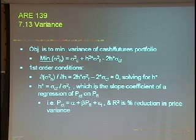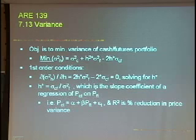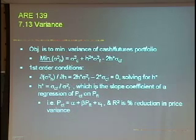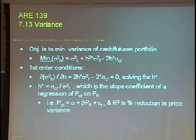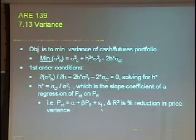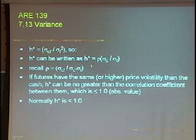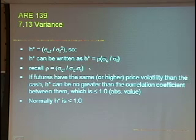H is the choice variable. What is the optimal hedge — is it 100%, 50%, 80%? That's what we're trying to decide. In order to minimize the variance, we take the first order condition, differentiate with respect to H, and solve for H*, which is our optimal hedge. We see that it depends on the covariance between cash and futures and the variance of futures — which is simply the regression coefficient if you regress cash prices on futures.